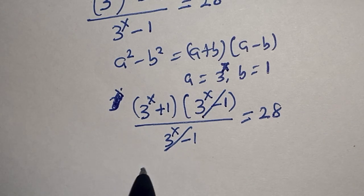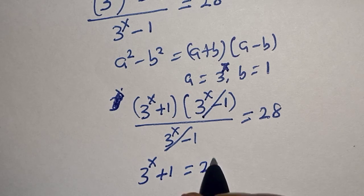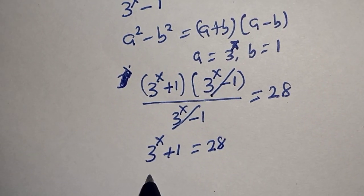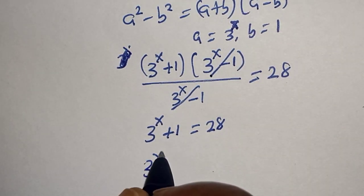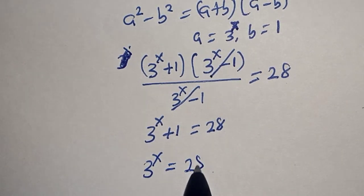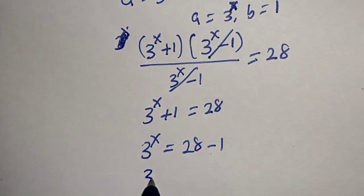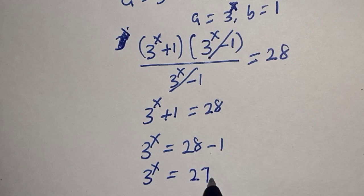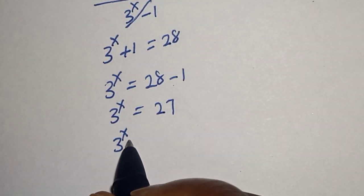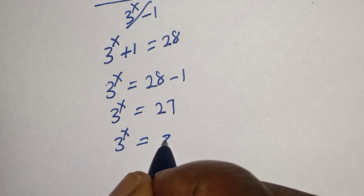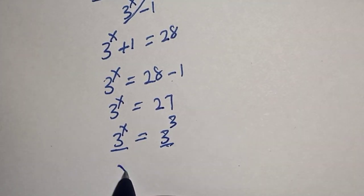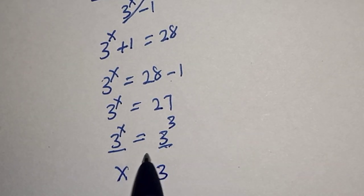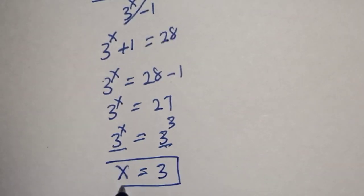Then we have 3 raised to power s plus 1 is equal to 28. So 3 raised to power s is equal to 28 minus 1, which is 27. Now 3 raised to power s is equal to 3 raised to power 3. We have the same base, so s is equal to 3. That is our final answer.